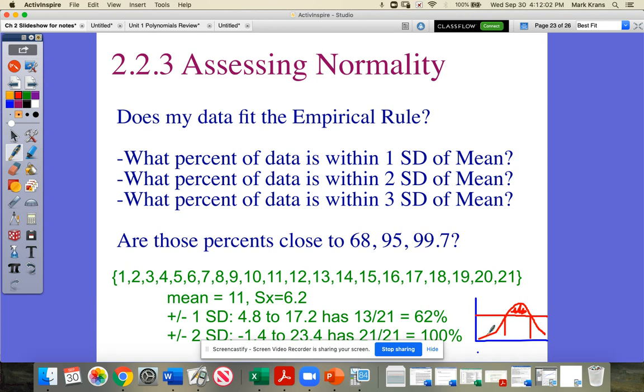When we go out two standard deviations, we end up getting the whole uniform distribution and we get 100% of the data. When in reality, this wants to have some whiskers that should be going past there. There should be about 5% of your data beyond that. And there isn't. So not a good fit.